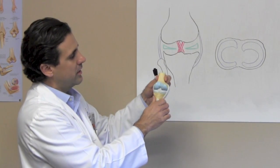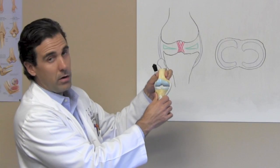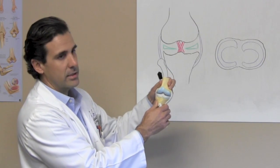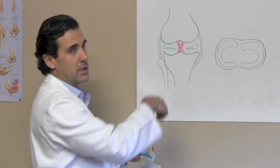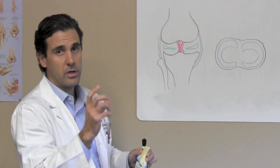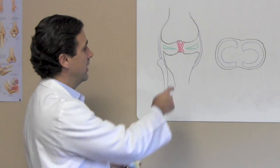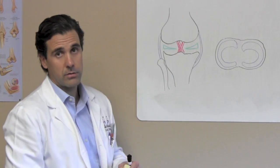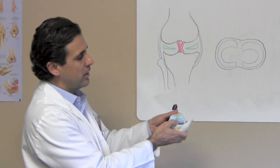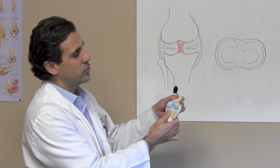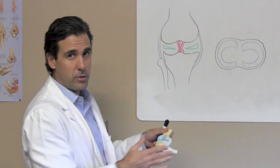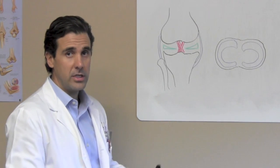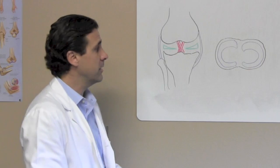These two ligaments stabilize the knee from what we call valgus stress and varus stress. In the middle you have your cruciate ligaments, which are crisscross ligaments — called cruciates because they basically crisscross each other forming a cross. They're in the middle of the knee and actually control for rotation. The most commonly injured cruciate is obviously the anterior cruciate ligament.